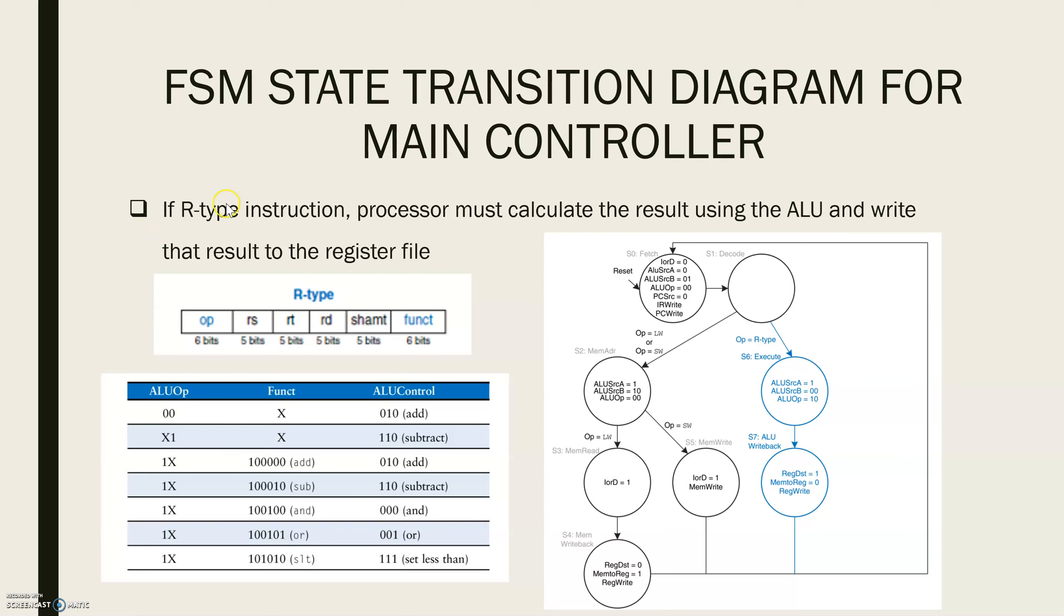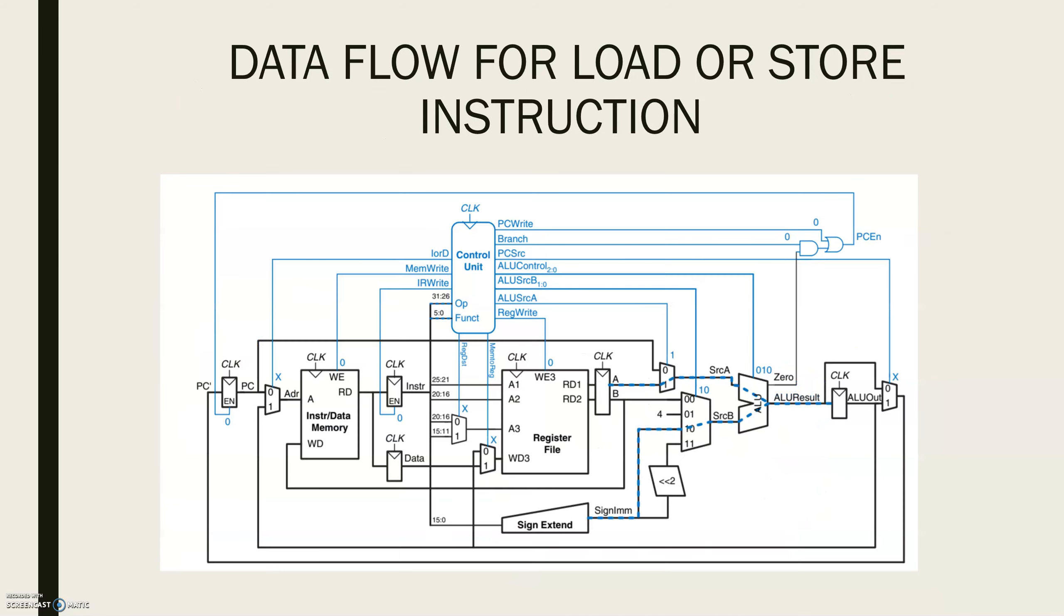If the OP code indicates an R-Type instruction, the Multi-cycle Processor must calculate the result using the ALU and write that result to the register file. In S6, the instruction is executed by selecting ALUSRC A as 1 to select register A.